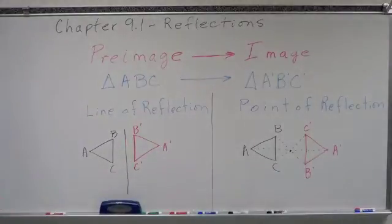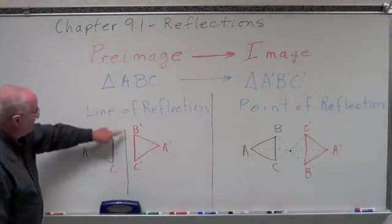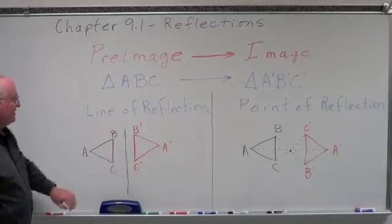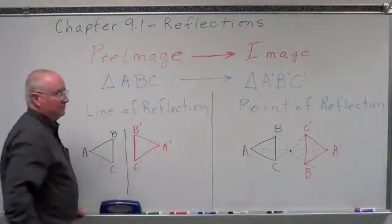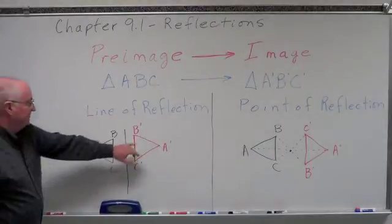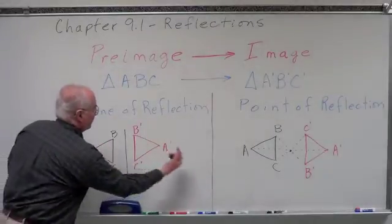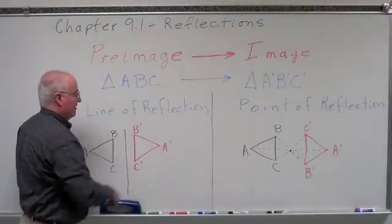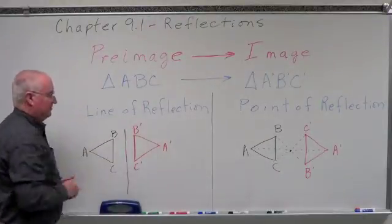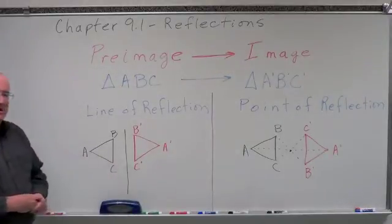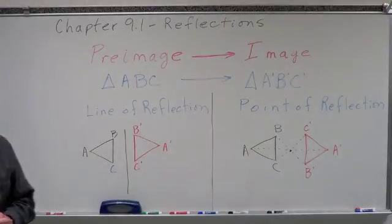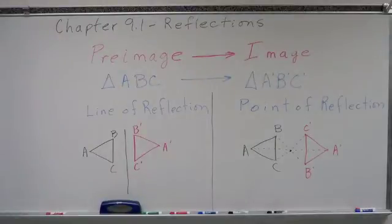On reflections we have lines of reflection — lines that we can reflect things over. We call it a line of reflection. This black line right here would be called the line of reflection. We have triangle ABC and we're going to reflect it across that line. The A is going to flip over to become A prime, B flips the same distance to become B prime, and C flips the same distance to become C prime. That's how we flip something over a line.